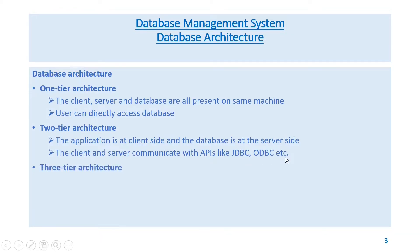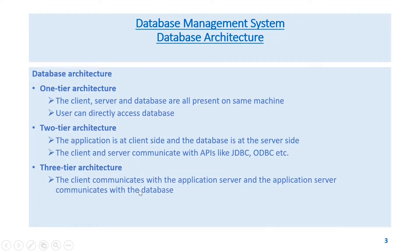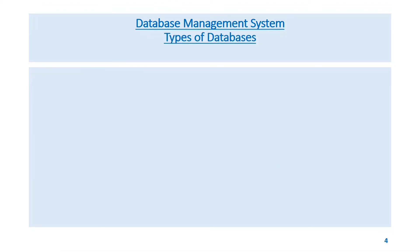Three-tier architecture: The client communicates with the application server, and the application server communicates with the database. So there is an application server in between the client and the database, used in large applications.